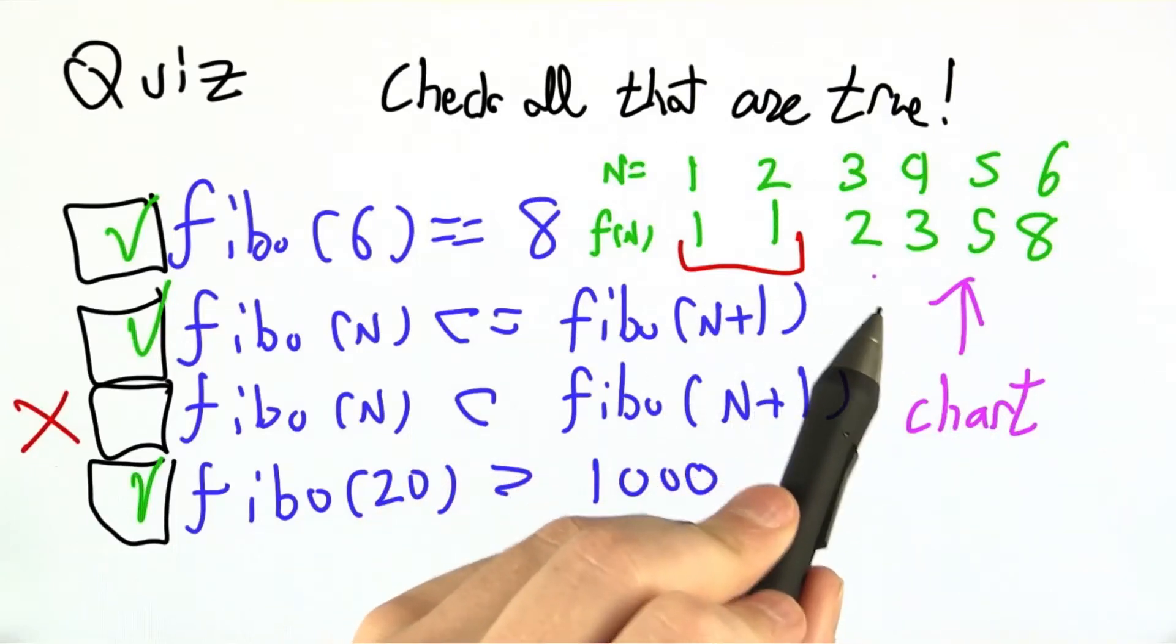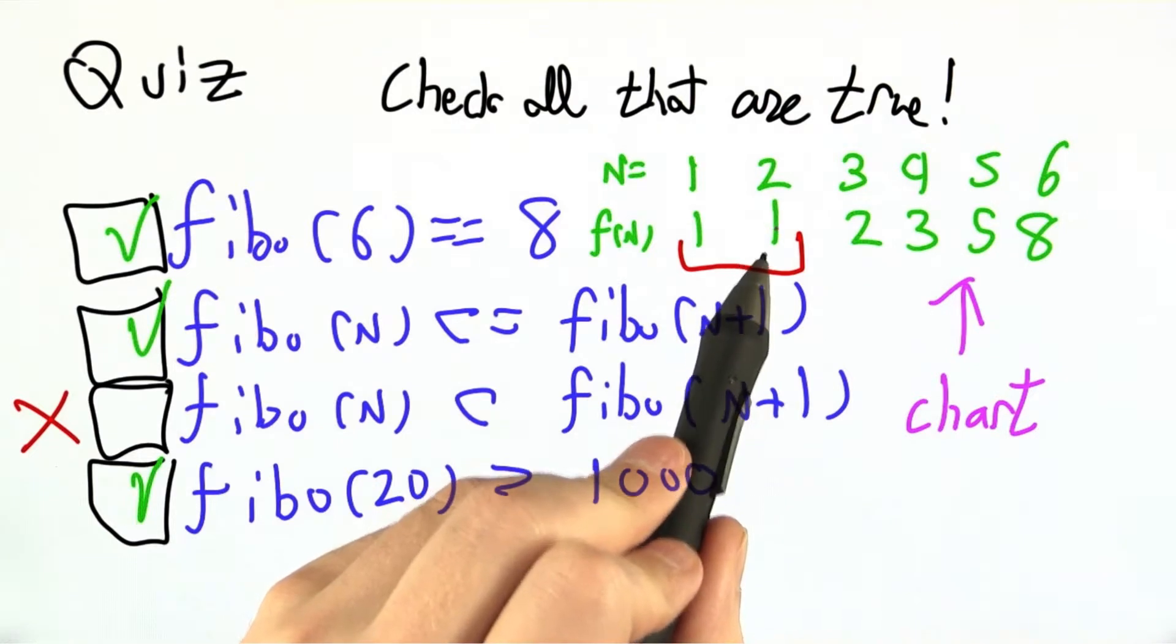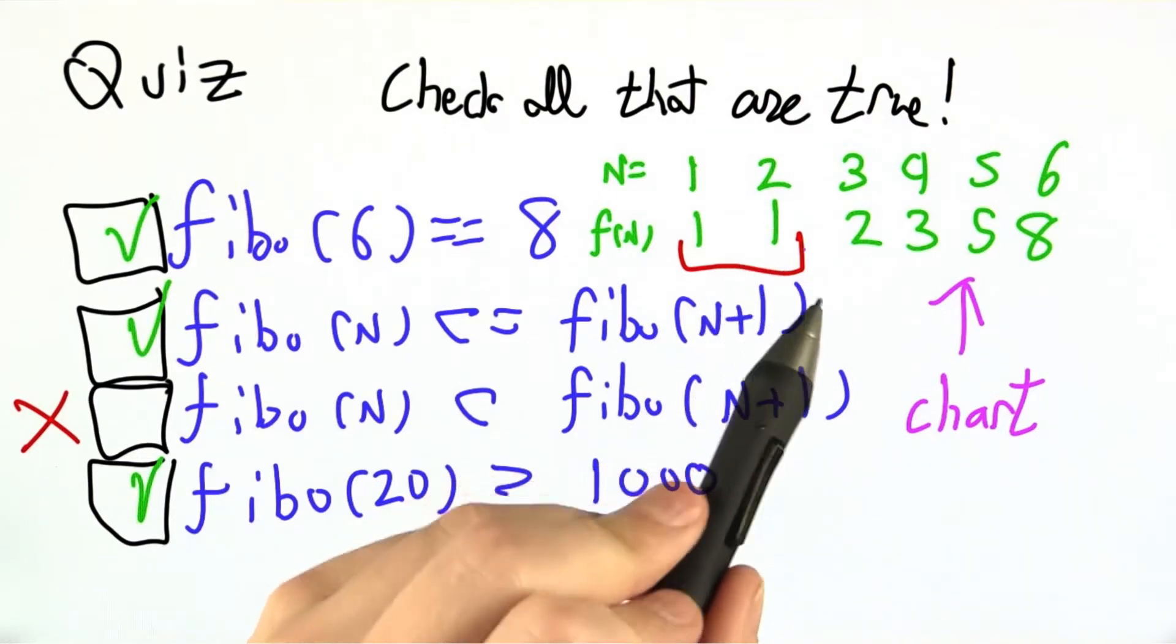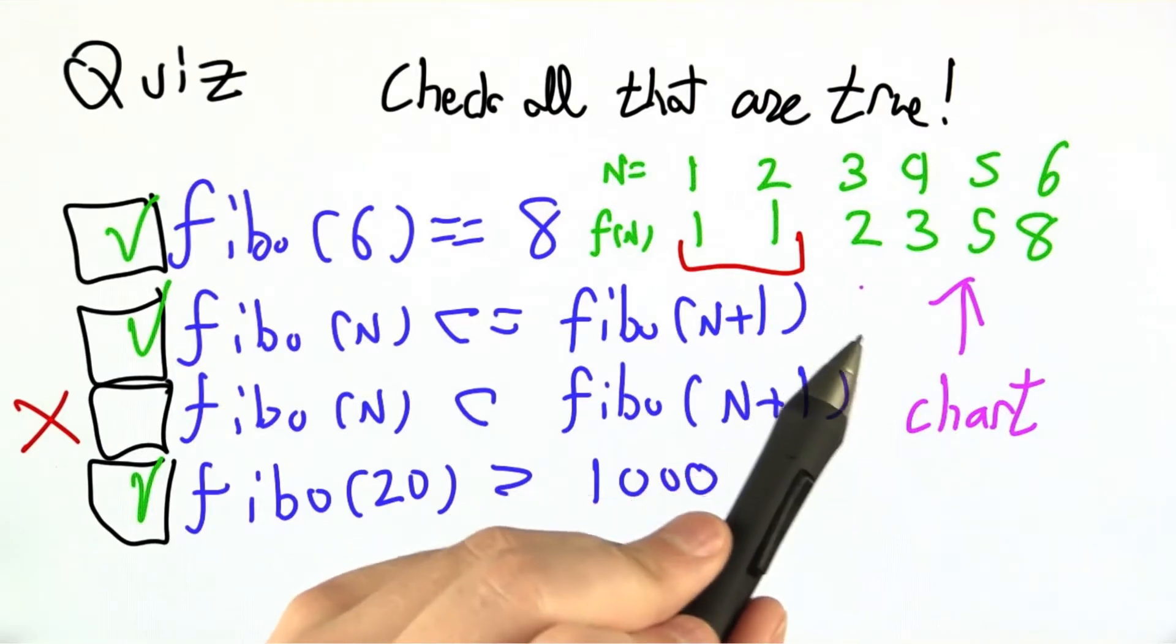So you might have noticed that up here on the right I made a very simple chart to try and explain how Fibonacci behaves to myself. We're going to use this same sort of chart to make Fibonacci much faster by avoiding repeating a lot of work.